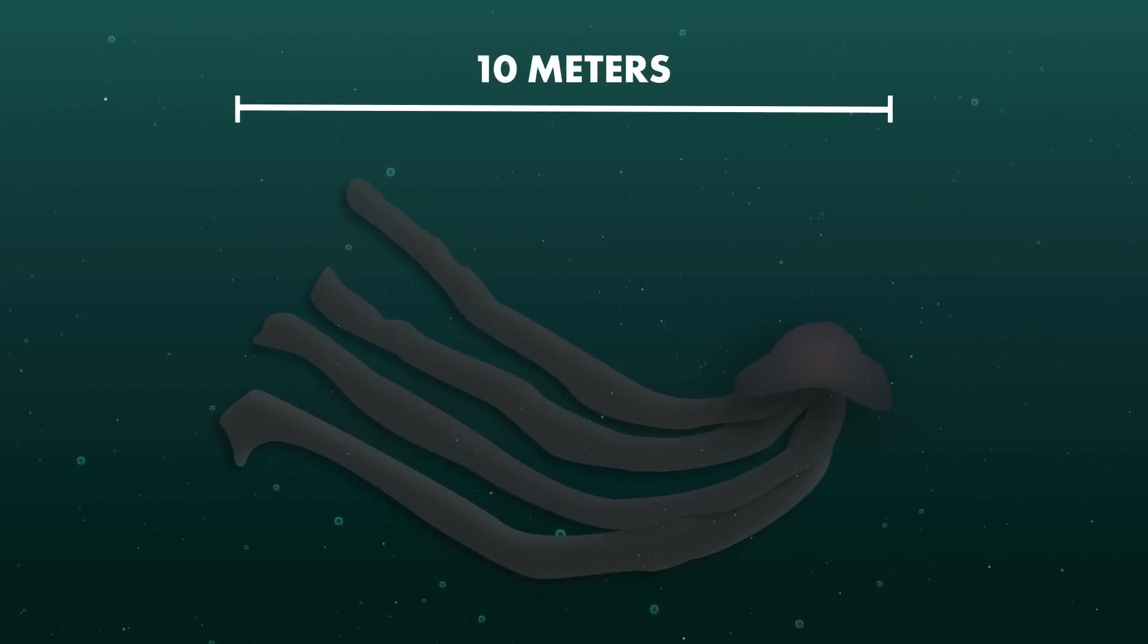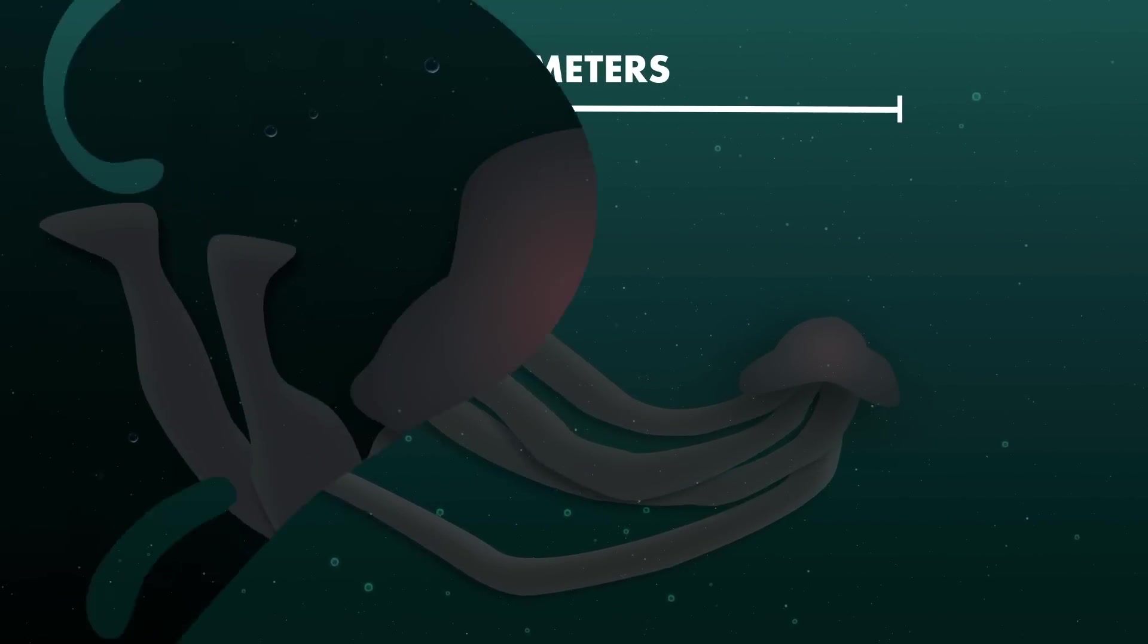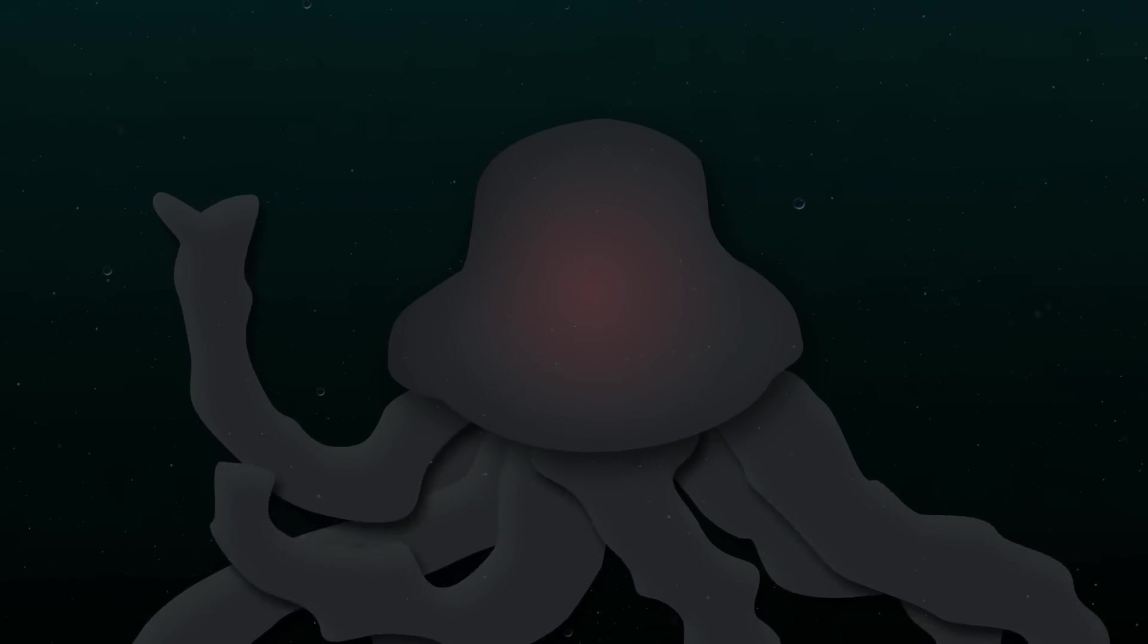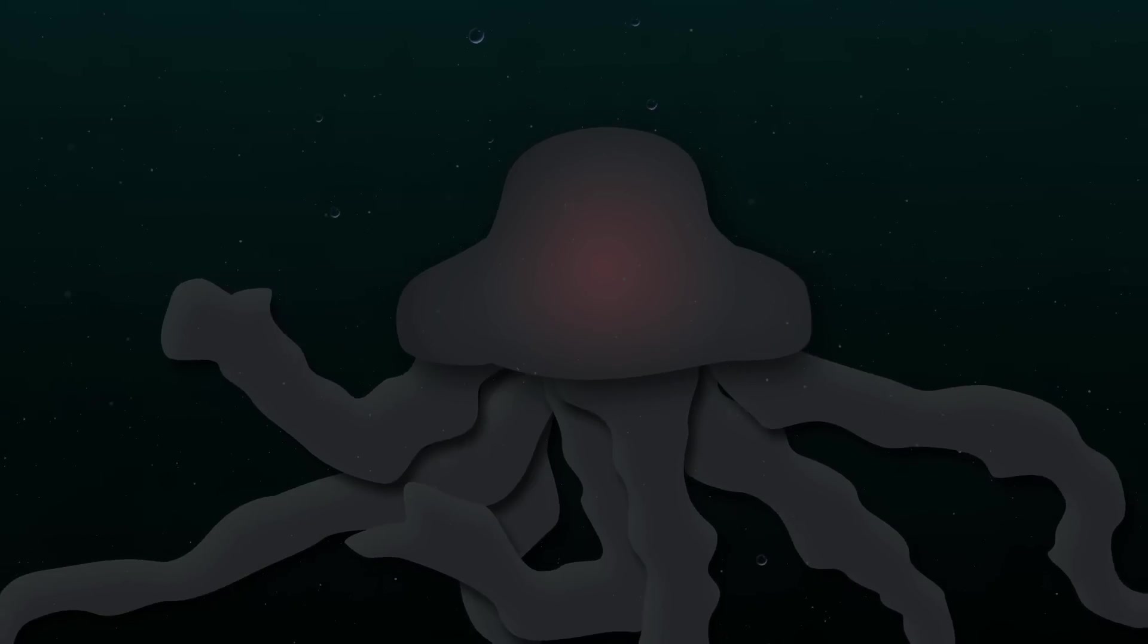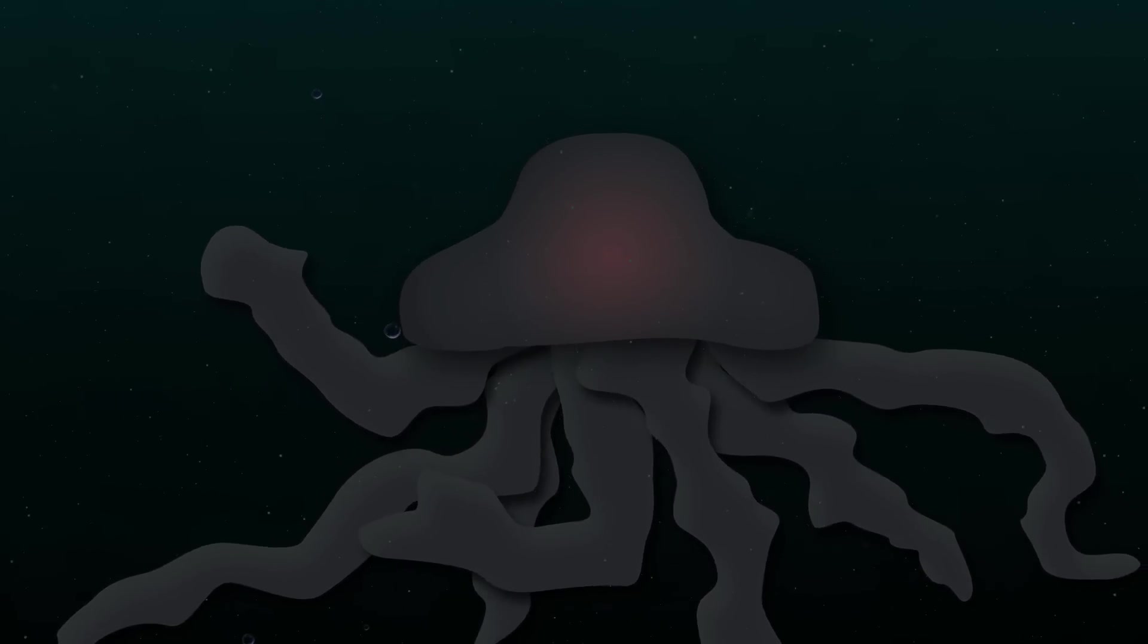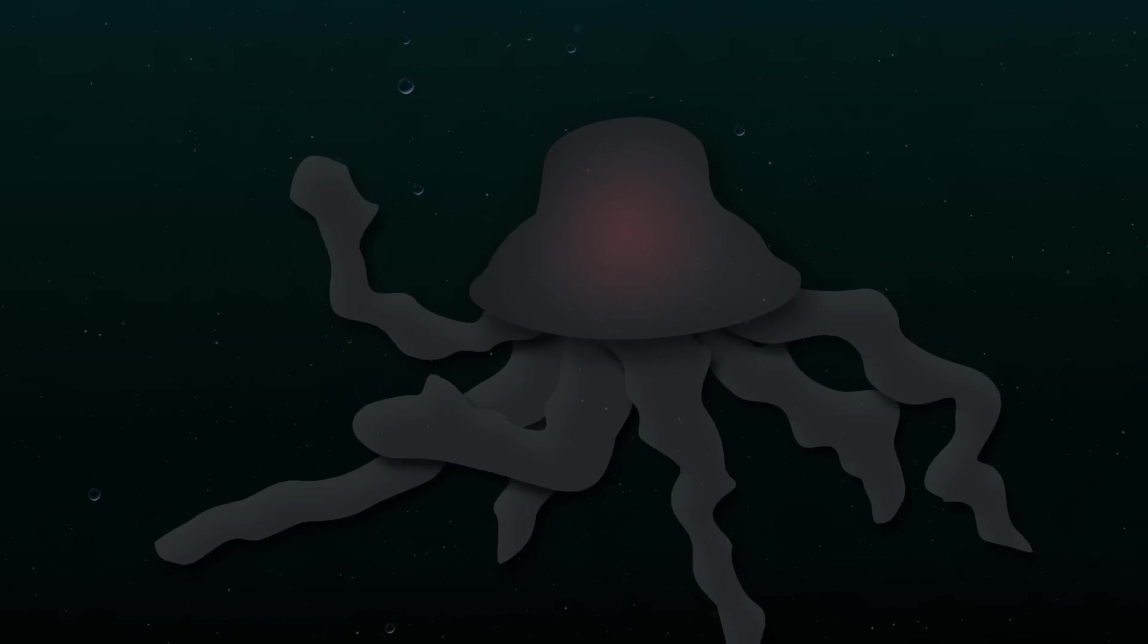Stretching up to 10 meters long, these graceful giants float like bundles of scarlet drapery. With their flowing tentacles, they feed on tiny animals like plankton and small fish. However, these jellies are so large and slow that other creatures may take refuge in their long arms, finding some safety in this dark and dangerous world.